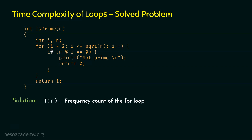If the number is not prime, then the loop will terminate abruptly, that is in between. But if n is prime, the loop will not terminate abruptly because this condition will never satisfy. This loop will terminate normally, meaning it will complete all its iterations. Therefore, this return 1 statement will execute, indicating that the number n is prime.